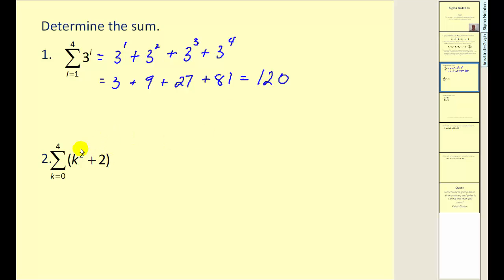Let's try another. Again, here's our formula. Here's our index. Now we're using the variable k. It doesn't matter. It normally starts at one, but it can start at any value. It always increases by one, and it will stop after the value of four.